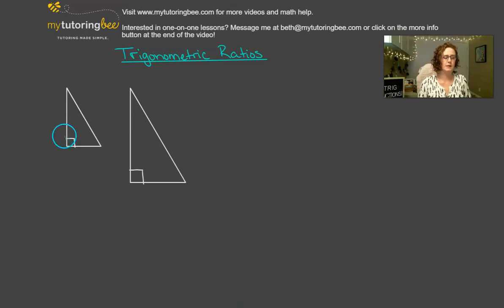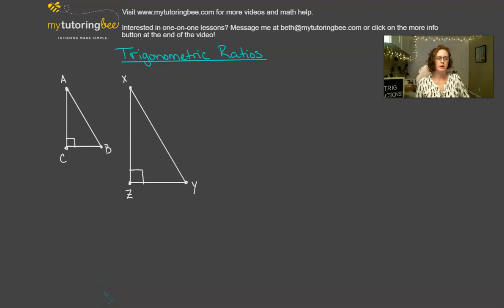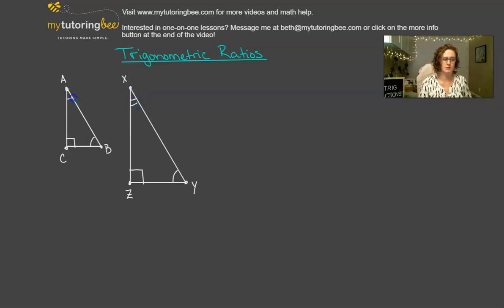Let's go ahead and label these triangles. This smaller triangle will be A, B, C, and this larger triangle will be X, Y, and Z. Triangle ABC is similar to triangle XYZ, and we know that because it has the same angles. So whatever this angle is, is the same as this angle, and whatever this angle is, is the same as this angle.